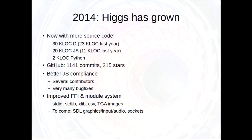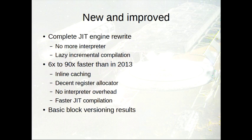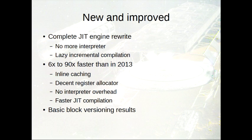But most importantly for my research, I have completely rewritten the JIT compilation engine for HIGS. There is no more interpreter, and I've incorporated a new architecture which I call Lazy Incremental Compilation, which I'm going to tell you more about later in this presentation. HIGS is now about 6 to 90 times faster on the benchmarks than it was last year. This is because I've added some optimizations like inline caching, I now have a decent register allocator, there's no more interpreter overhead, and the JIT compiler itself generates machine code faster than before.